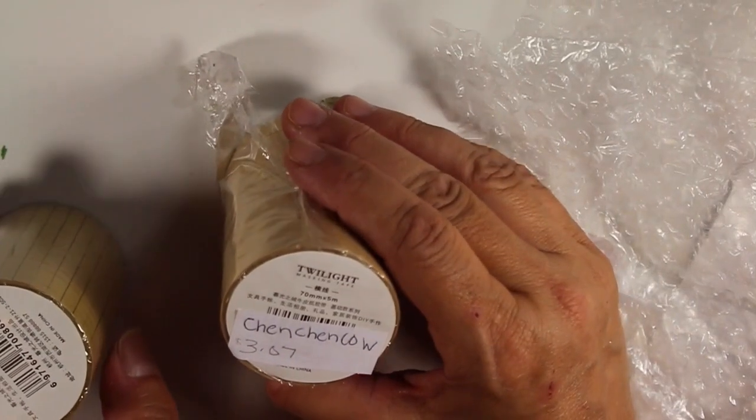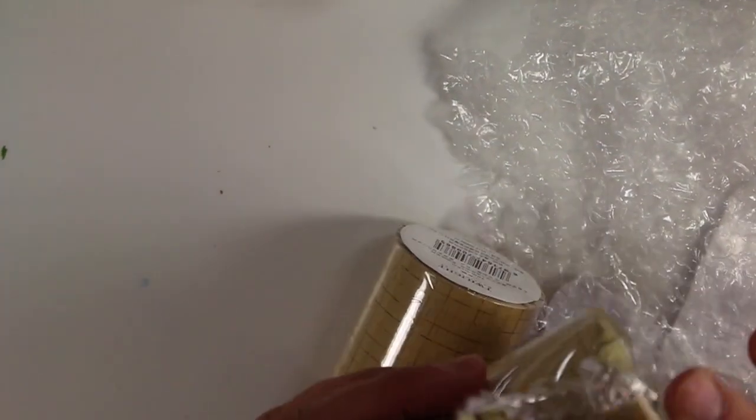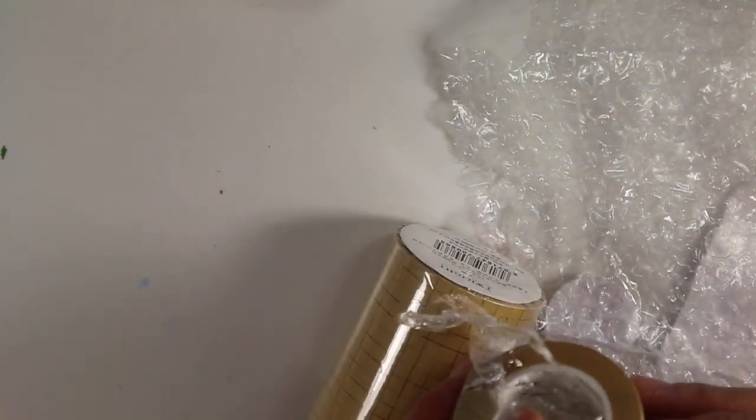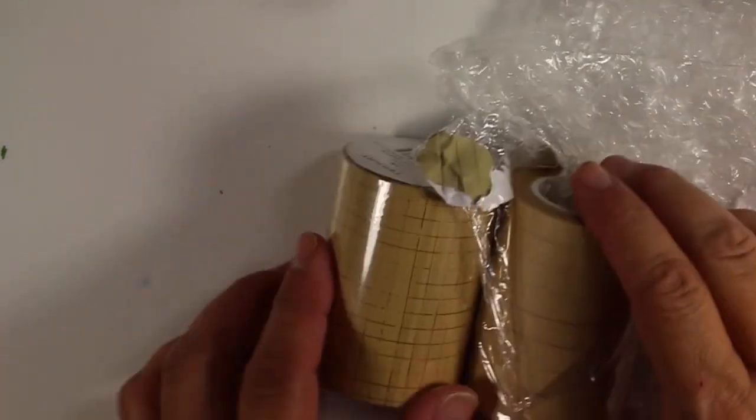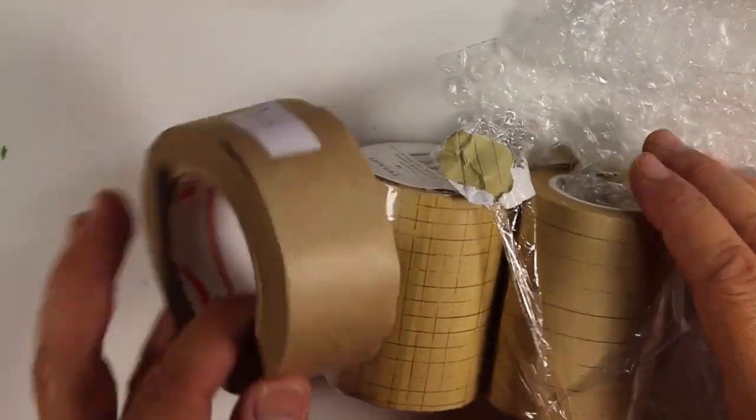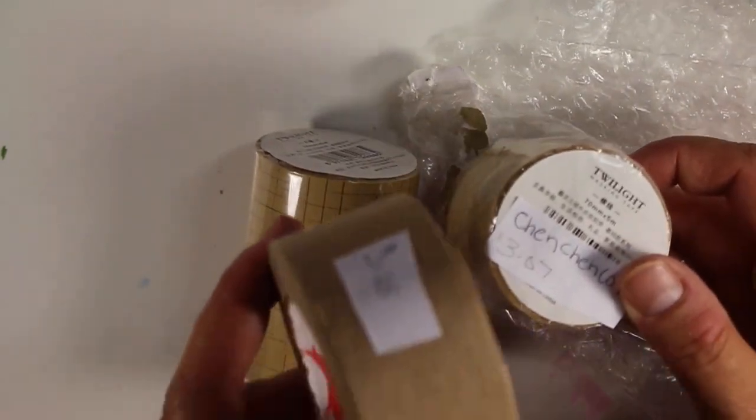These are some more tapes from the Chen Chen Cow store. These were $3.07. They're similar to the other tapes that I did. Again, they have like a backing to them, so you would pull it off the backing. This one's line, a grid, and then this is just like a plain craft. This one was $3.25. These were $3.07.